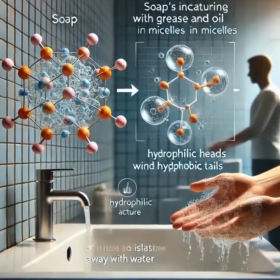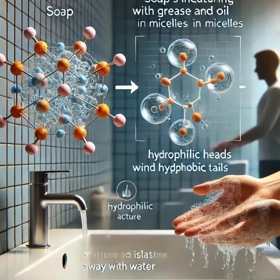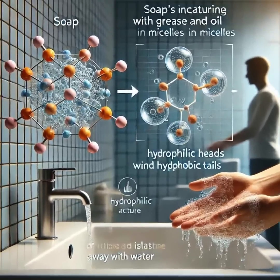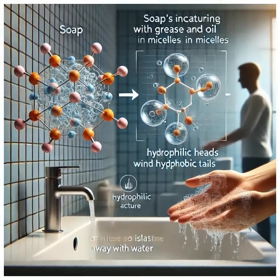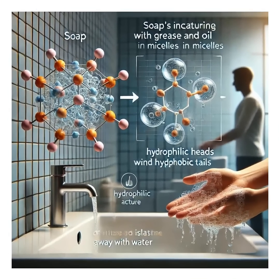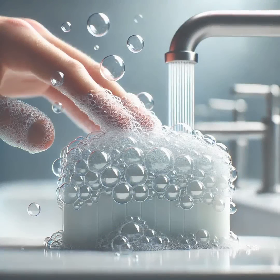Here's how it works. When you add soap to water with grease or oil, the soap molecules arrange themselves into structures called micelles. The hydrophobic tails attach to the grease, while the hydrophilic heads face outward, forming a sphere around the oil.